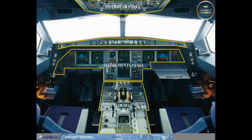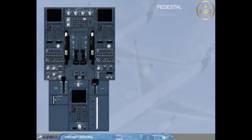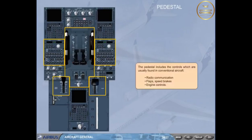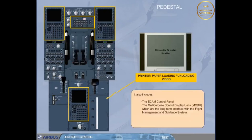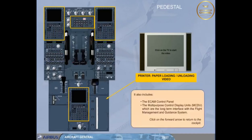Click on the pedestal panel area to display it. The pedestal includes the controls which are usually found in conventional aircraft: radio communication, flaps, speed brakes, and engine controls. It also includes the ECAM control panel and the Multi-purpose Control Display Units (MCDU), which are the long-term interface with the flight management and guidance system. Click on the forward arrow to return to the cockpit.